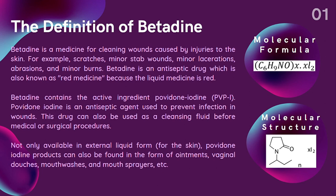Betadine contains the active ingredient povidone iodine, or PVPi. Povidone iodine is an antiseptic agent used to prevent infection in wounds. This drug can also be used as a cleansing fluid before medical or surgical procedures. Not only available in external liquid form for the skin, povidone iodine products can also be found in the form of ointments, vaginal douches, mouthwashes, mouth sprayers, etc. We can also see on this page the molecular formula of Betadine or povidone iodine: C6H9NO·xI2, and its molecular structure.